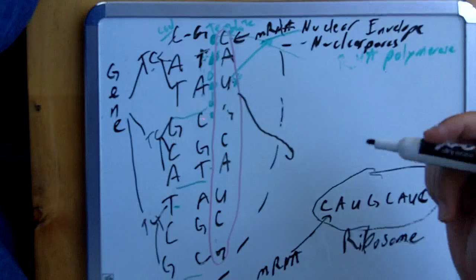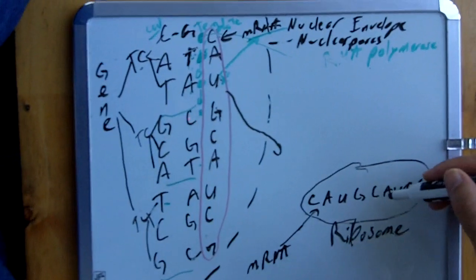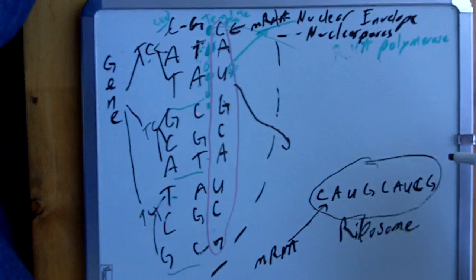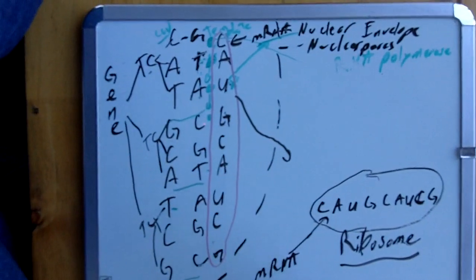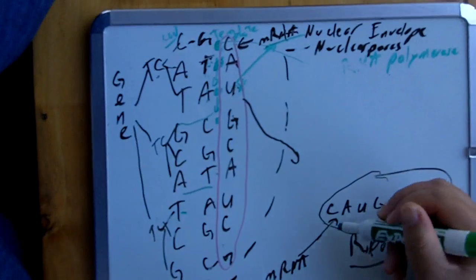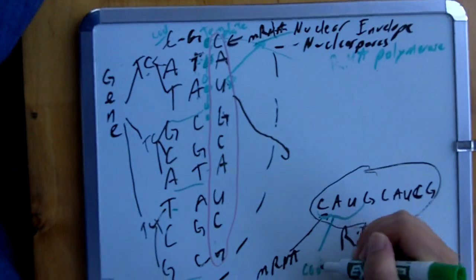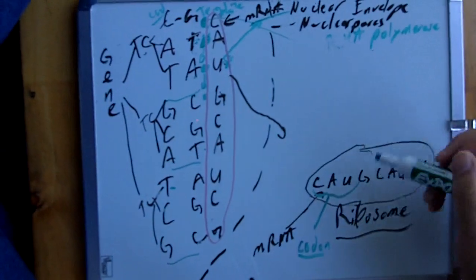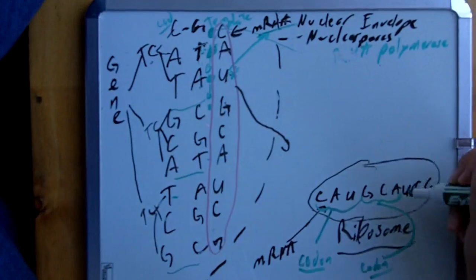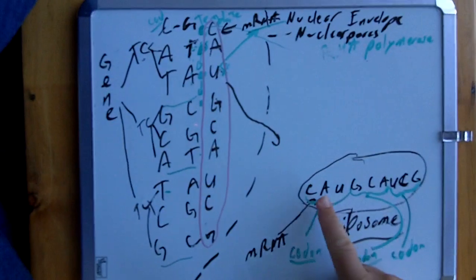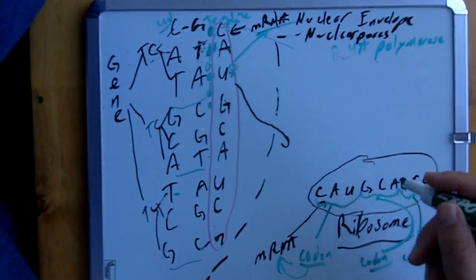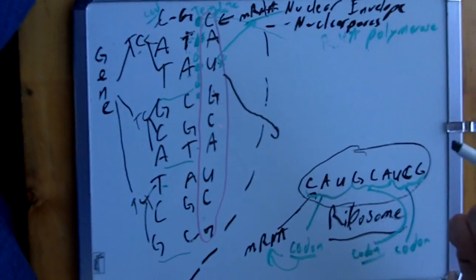So this is messenger RNA, located on the ribosome. If you get asked on a test where RNA synthesis takes place — what organelle — your answer is ribosome. The way we look at ribosomes: we read them in threes. In DNA we read in threes; in messenger RNA we read in threes. The three we have right here is called a codon. CAU is a codon, GCA is a codon, and UCG is also a codon. Codons you only find in messenger RNA.